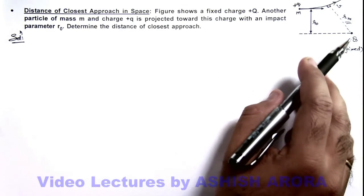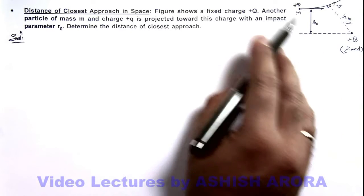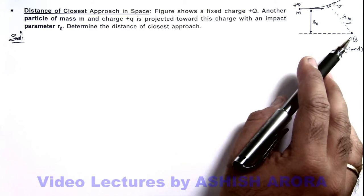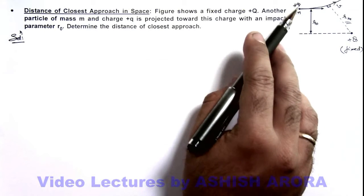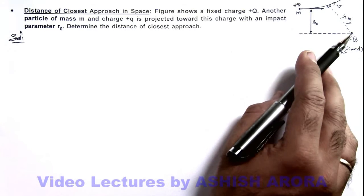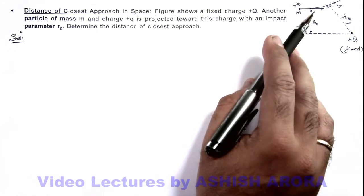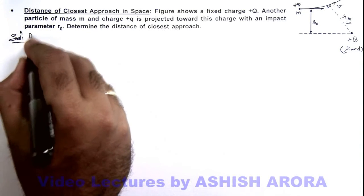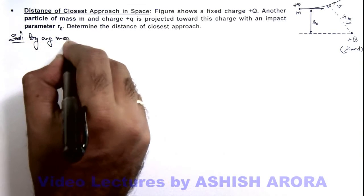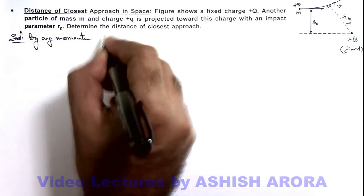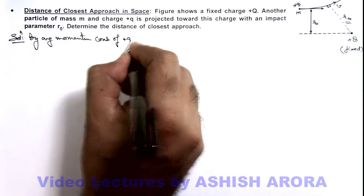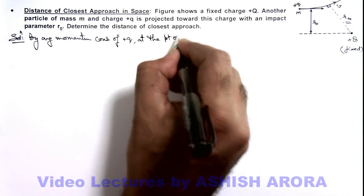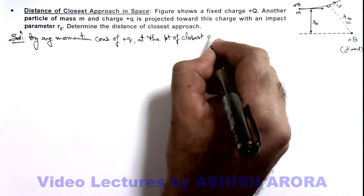In this situation as this charge is fixed, the line along which the electric forces will act will pass through the fixed charge. Hence we can say no torque will be acting on this charge about this charge, so its angular momentum will remain conserved. By angular momentum conservation of +q at the point of closest approach,